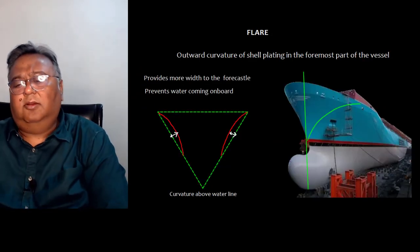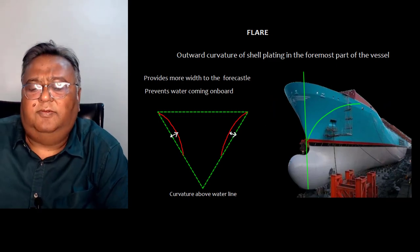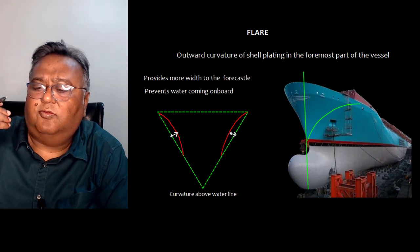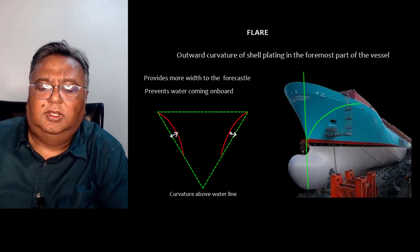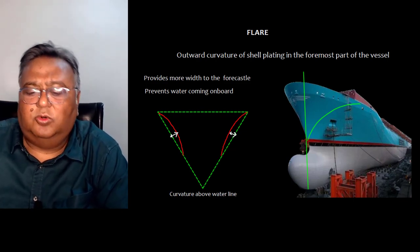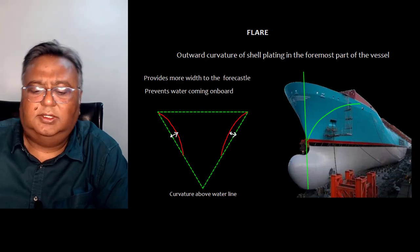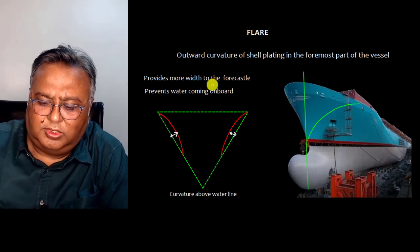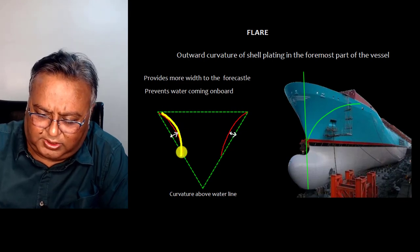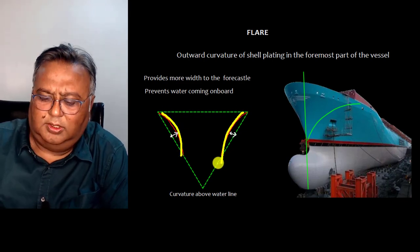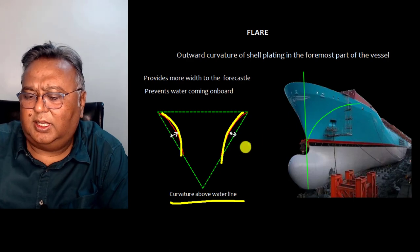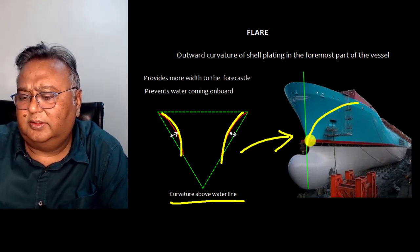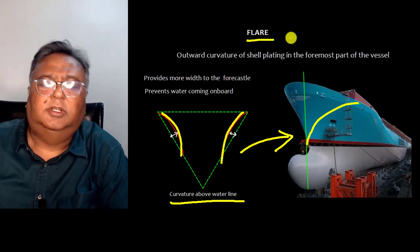Now let's talk about flare. Flare is the outward curvature of the shell plating in the foremost part of the vessel. It provides more width to the forecastle and prevents water from coming on board. This is the curvature of the waterline, and as shown in this diagram, this is the flare of the ship.